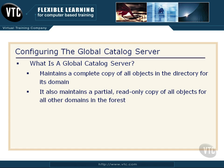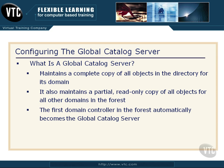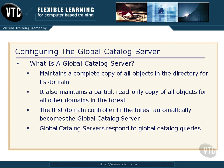It also has a partial read-only copy of objects for all the other domains in the forest as well, because when we start doing cross-domain communication and manipulation of objects, that starts to get complicated for keeping up with all the permissions, and the Global Catalog Server helps there as well. Keep in mind, when you create the first domain controller in a forest, that is automatically set up as the Global Catalog Server. Global Catalog Servers simply live to maintain a copy of all these objects, and then they respond to Global Catalog queries.